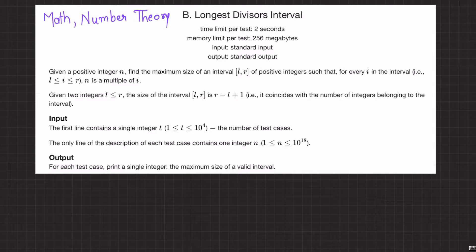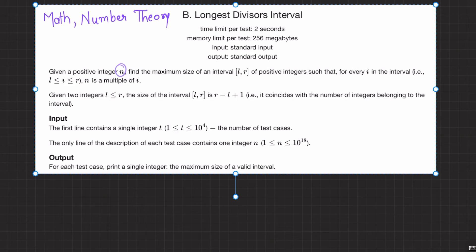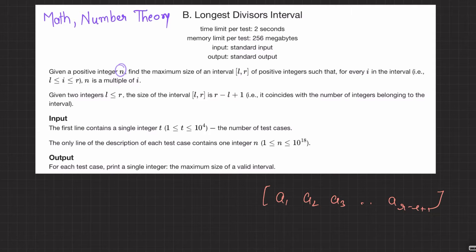Welcome back everyone. Let's solve this question: Longest Divisors Interval. On the surface it looks very difficult, but the idea is very simple - the observation is what's important. The question asks: given a positive integer N, find a maximum interval of positive integers such that N is a multiple of every number in that range - a contiguous segment a1, a2, a3... where each element is consecutive.